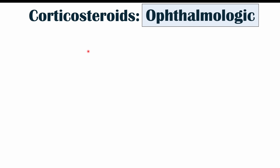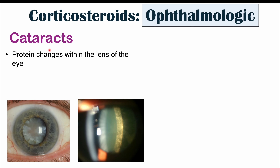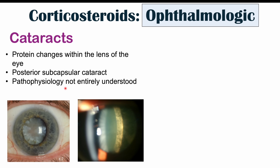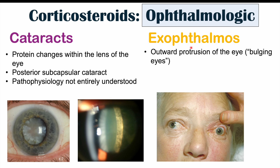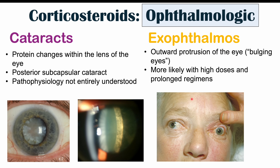Moving on to corticosteroid effects on the eyes, we can see an increased risk of cataracts, likely due to protein changes within the lens of the eye. Specifically, corticosteroid use is associated with a higher risk of posterior subcapsular cataracts. Patients with this type of cataract often describe symptoms like glares or halos, though the exact pathophysiology is not entirely understood. We can also see exophthalmos — outward protrusion or bulging of the eye — with longer-term, higher-dose use.